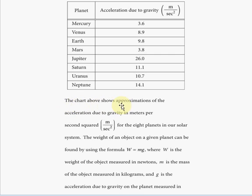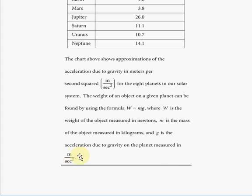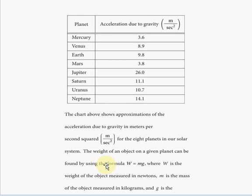The chart above shows approximations of the acceleration due to gravity in meters per second squared for the eight planets in our solar system. The weight of an object on a given planet can be found using the formula W = mg, where W is the weight of the object measured in newtons, m is the mass of the object measured in kilograms, and g is the acceleration due to gravity on the planet measured in meters per second squared.